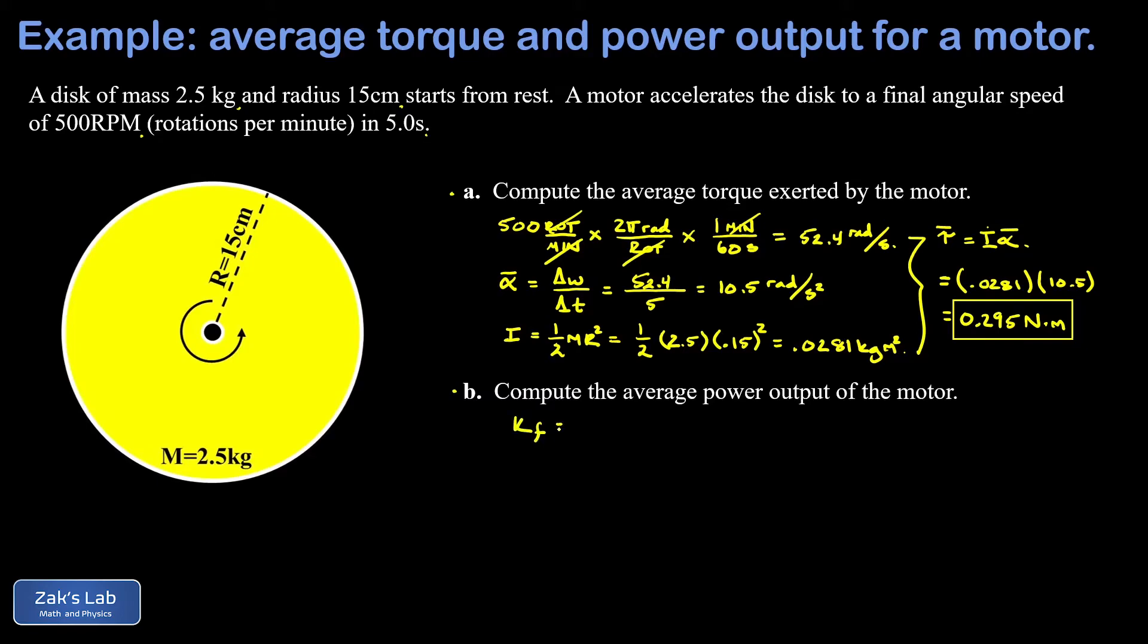I'll call that K final, and that's one-half I ω squared. Again, all these formulas are analogous to those for linear motion. Moment of inertia is playing the role of mass here; angular velocity omega is playing the role of velocity. So this is the analog to one-half mv squared.